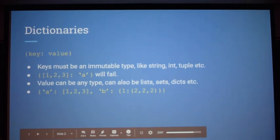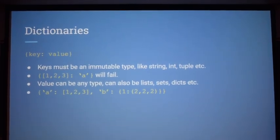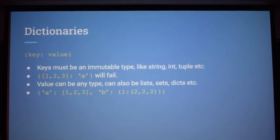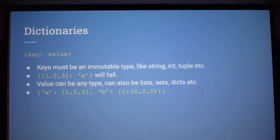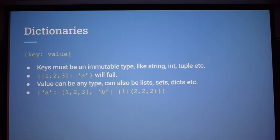So, dictionaries — what are dictionaries? Dictionaries are basically a set of key-value pairs. Keys have to be an immutable type, like a string, integer, or a tuple. Something like a list as a key would fail, because a list is mutable. But the value has no restrictions — you can have it be anything: a list, string, or even another dictionary.